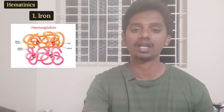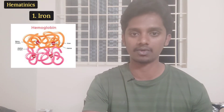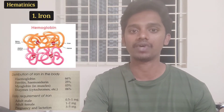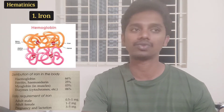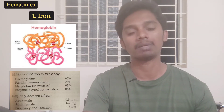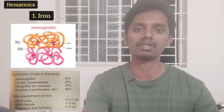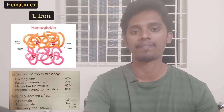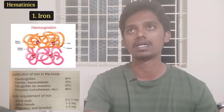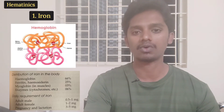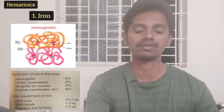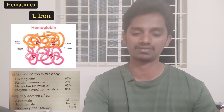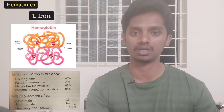Two-thirds of the body's iron is in hemoglobin. About 25% is stored as ferritin. There are also enzymes like cytochrome that contain iron as a component — these account for around 6% of iron. Overall, most of the iron — about two-thirds — is in hemoglobin, with around 2% in other forms.